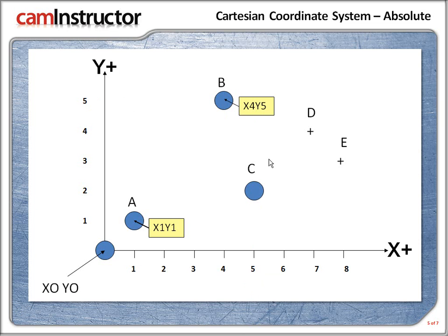Now moving on to position C. The absolute X for C is X5 with the Y at 2. So for position C X5, Y2.